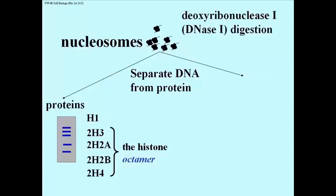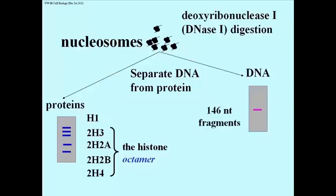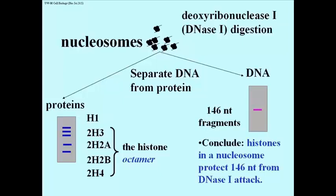Now if we take a look at the DNA yanked off of the nucleosome prep we just made and run a gel of it under these conditions, we get a single size class of DNA, and that size class is of course 146 nucleotide pairs long. The final conclusion is that histones in a nucleosome protect 146 nucleotides from DNase attack.